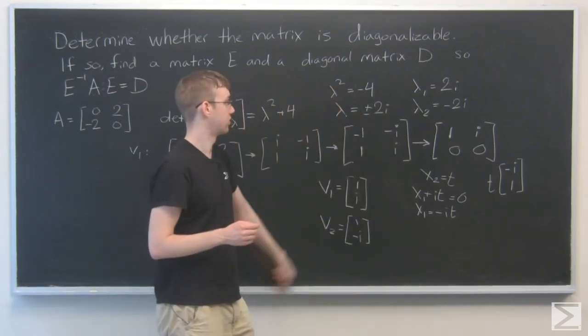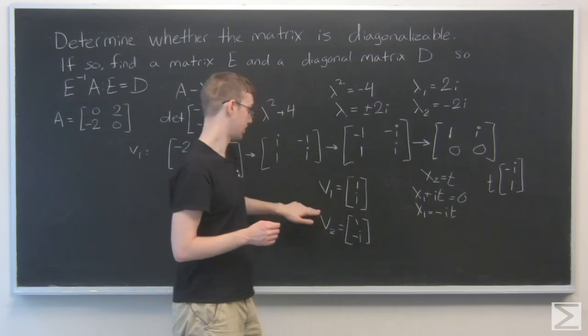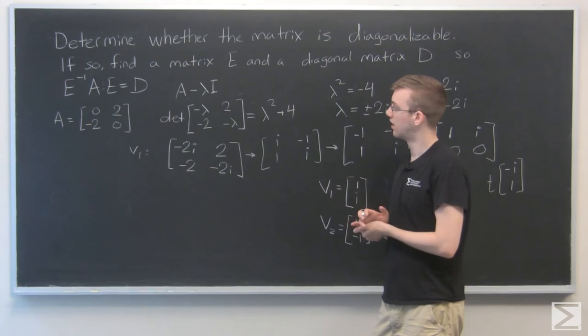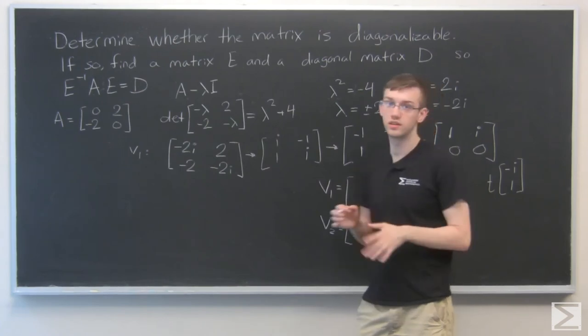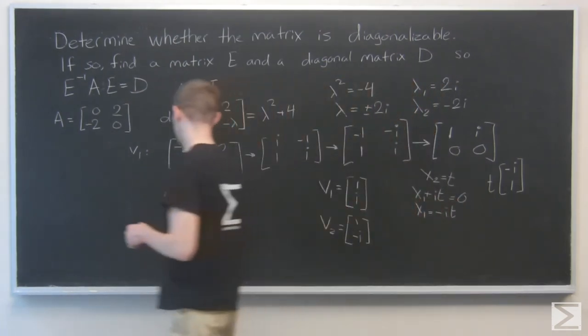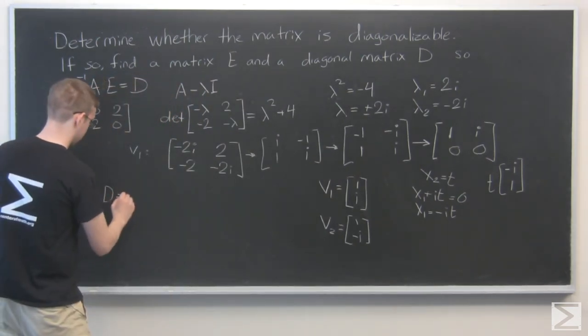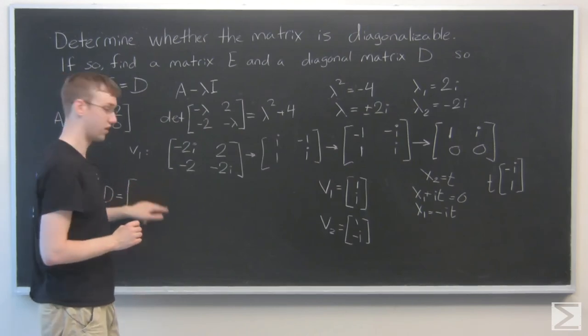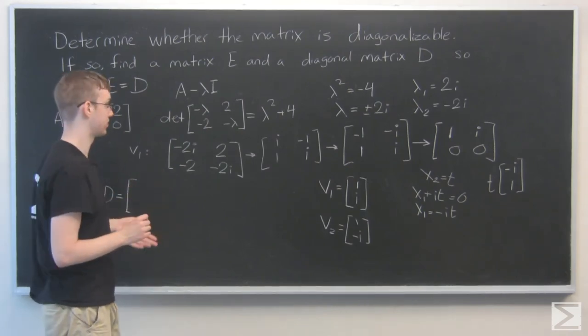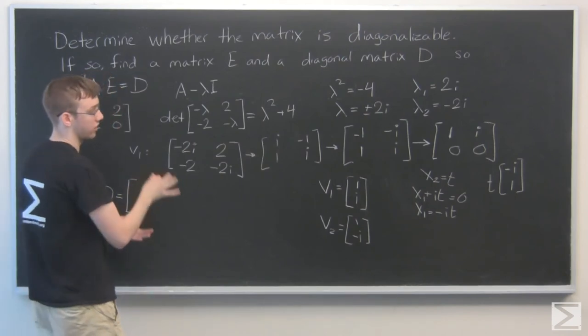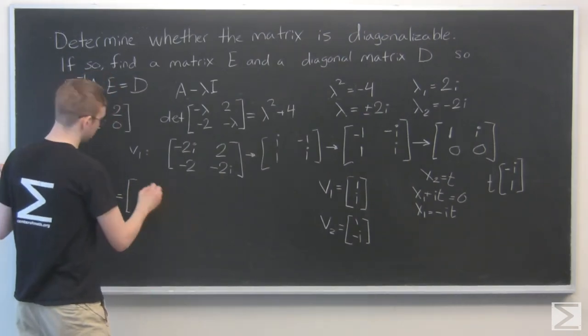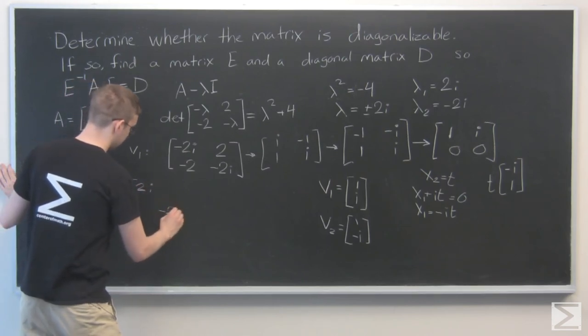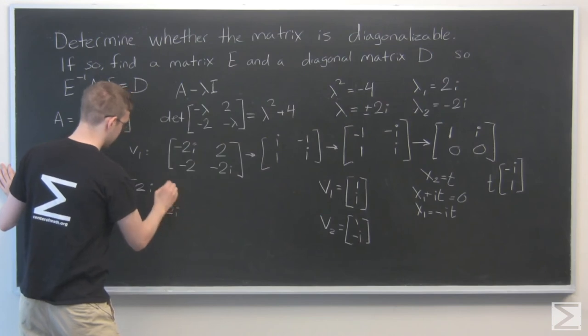So we have our eigenvalues, we have our eigenvectors. Now how do we get this e and this d? So e, actually I'm going to start with d. d is really easy to get. We just line up these eigenvalues along the diagonal of the 2x2 matrix, where all the other values are 0. So lambda 1 is 2i, lambda 2 is minus 2i, and we'll have 0s here and here.